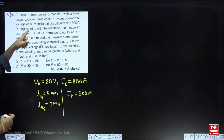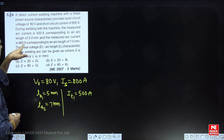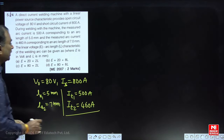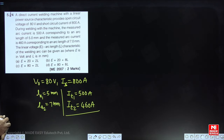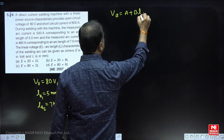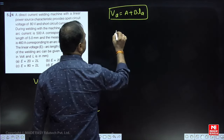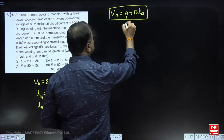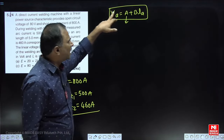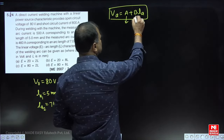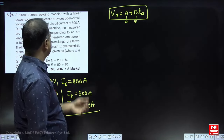So, I₁ = 500 A at arc length 5 mm, and I₂ = 460 A at arc length 7 mm. The arc voltage–arc length characteristic is assumed to be V_A = A + B·L_A (linear). We need to find constants A and B.